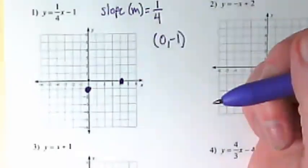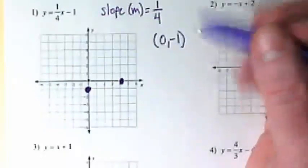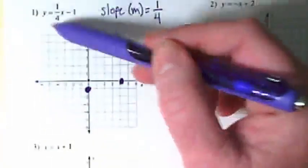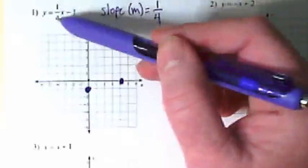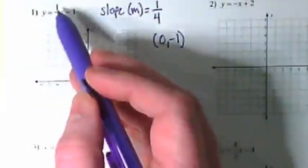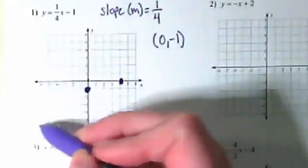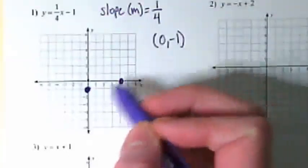Now before I graph this line, I might put another point on this graph, but I also want to step back and think about, in my equation, is there a negative sign in front of the slope or is it a positive slope? 1 over 4 is positive. Does it make sense that it looks like my line is going to go this way then?